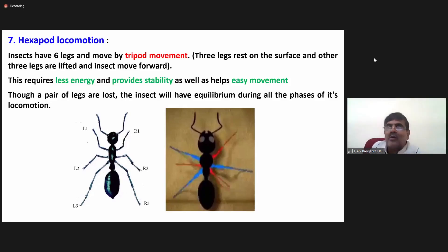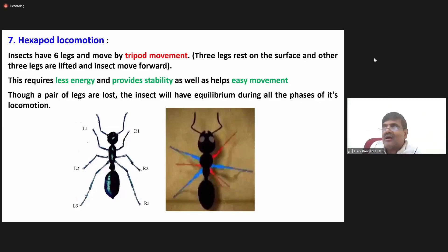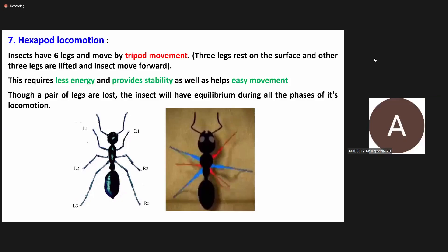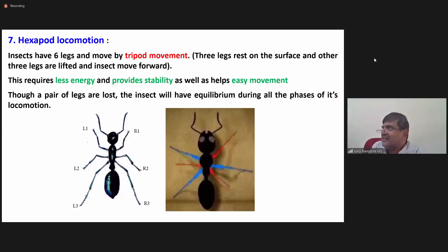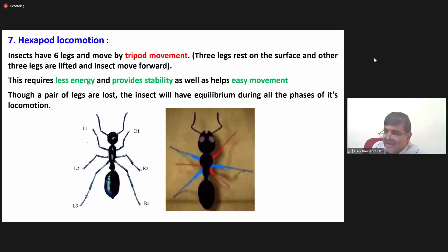A question for the class: how long do human beings grow? After 18 to 20 years, vertical growth completely ceases — though horizontal growth can continue. What about insects? How does growth take place in insects — is it similar to human beings or different?